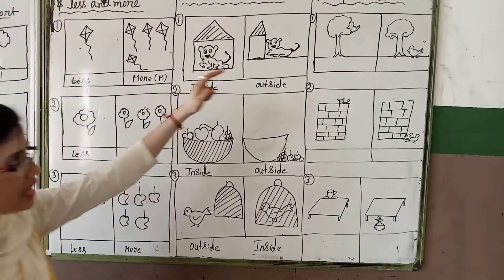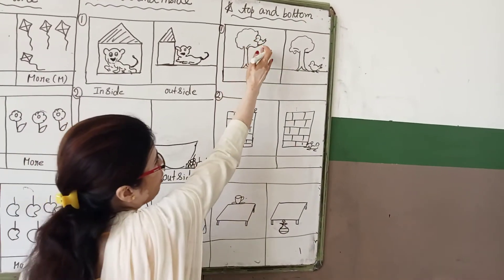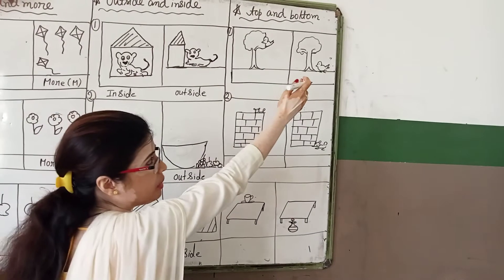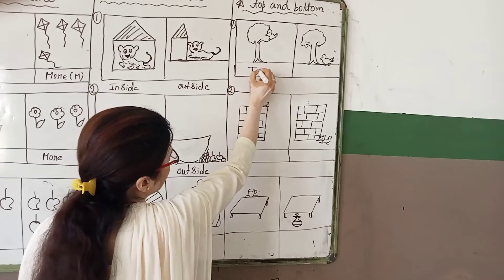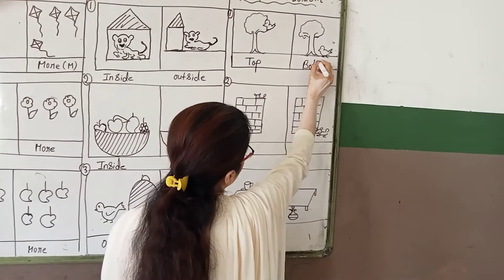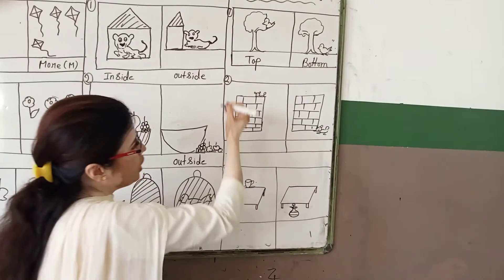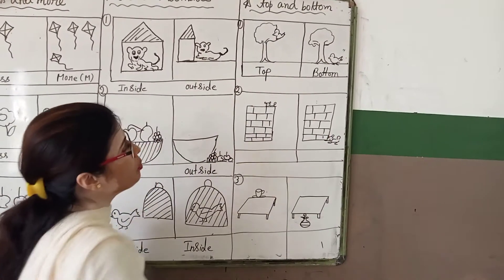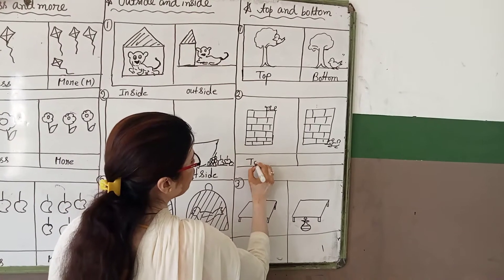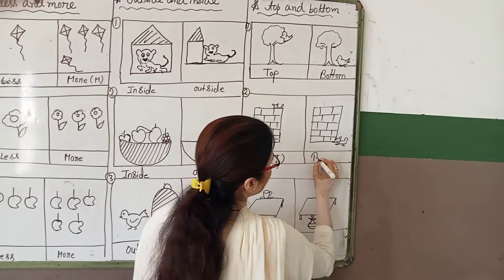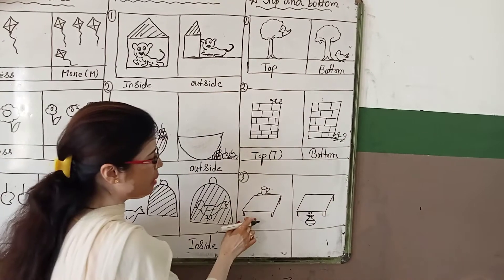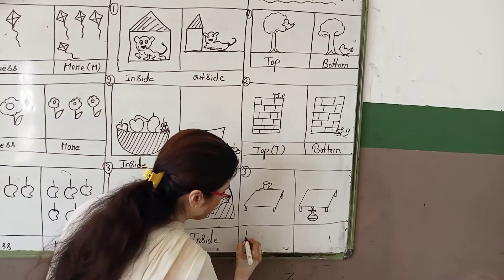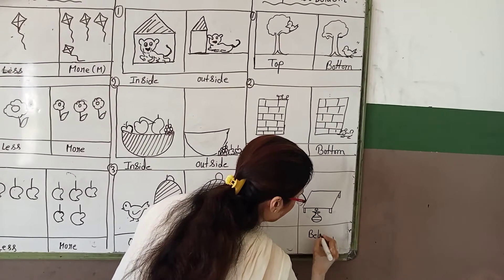So hope it is clear to all. Next example: top and bottom. Top means the top of the tree and bottom of the tree. Here two birds — one bird is sitting on the top of the tree and the other bird is sitting at the bottom of the tree. You can write here top and you can write here bottom. Next: two cats on a wall — one cat is on top of the wall and another cat is sitting below or at the bottom of the wall. You can write here top or T, and here bottom or B. Next: a car is on the table, on top of the table, and this pot is at the bottom of the table. You can write here top and here below or bottom.